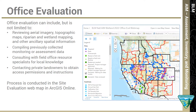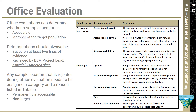Office evaluations can include, but are not limited to, reviewing aerial imagery, topographic maps, riparian and wetland mapping, and other ancillary and spatial information; compiling previously collected monitoring or assessment data; consulting with field office resource specialists for local knowledge; and contacting private landowners to obtain access permissions and instructions. This process is conducted in the site evaluation web map in ArcGIS Online. Crew leads and crew managers for each field team should conduct office evaluation in the spring to prepare for the summer field season. Office evaluations can be used to determine whether a sample location is accessible and if it is a member of the target population.